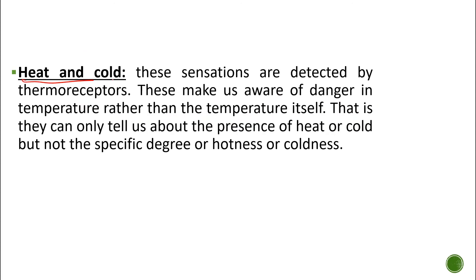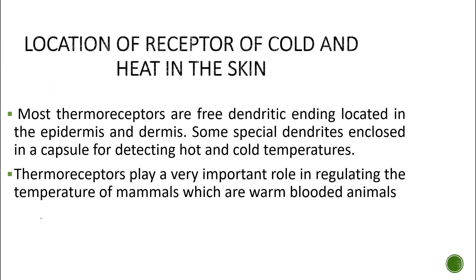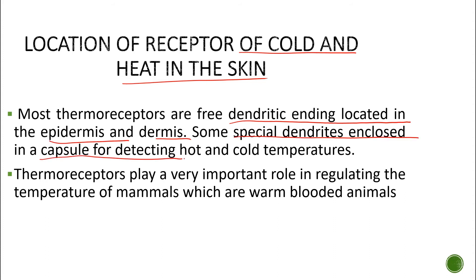Heat and cold sensations are detected by thermoreceptors. These make us aware of the danger of temperature rather than the temperature itself — they can tell us about the presence of heat or cold, but not the specific degree. Most thermoreceptors are free dendritic endings located in the epidermis and dermis, with some in special capsules in the dermis for detecting hot and cold. Thermoreceptors play a very important role in regulating body temperature in mammals, which are warm-blooded animals.